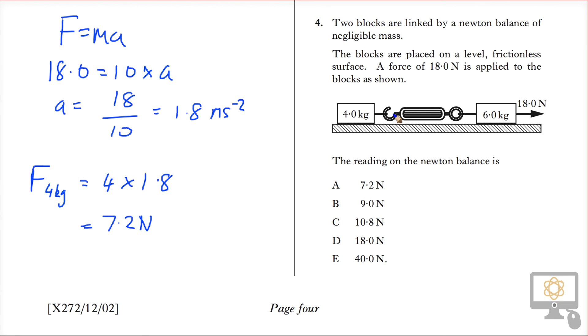So that's the force which is acting in this direction on that mass, 7.2 newtons. That's the only force that's acting on this mass because it's on a frictionless surface. And so therefore that is the reading on the Newton balance.